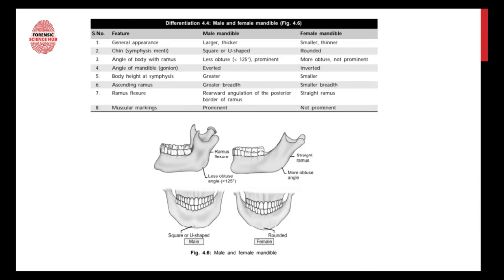Now let's talk about the male and female mandible — the lower jaw. The male mandible is larger and thicker, whereas in females it is smaller and thinner. Regarding the chin or symphysis menti, it is square or U-shaped in males — as visible in the picture — whereas it is rounded in females.